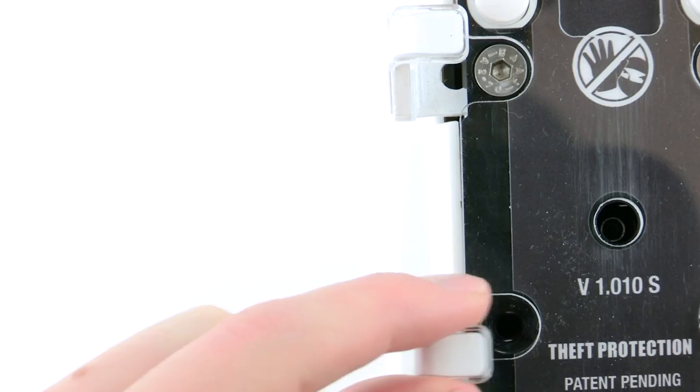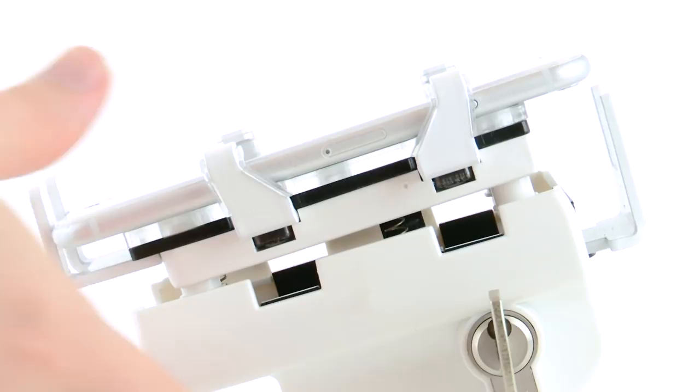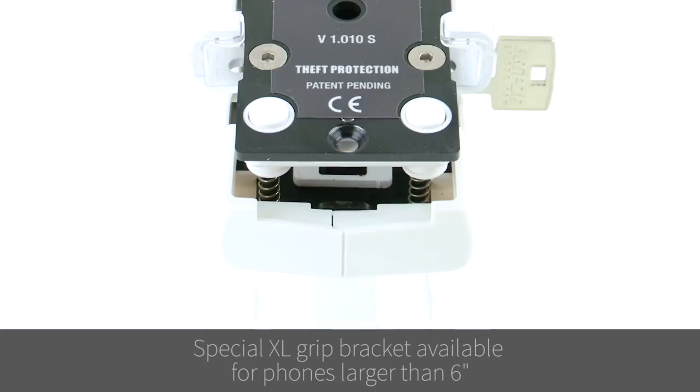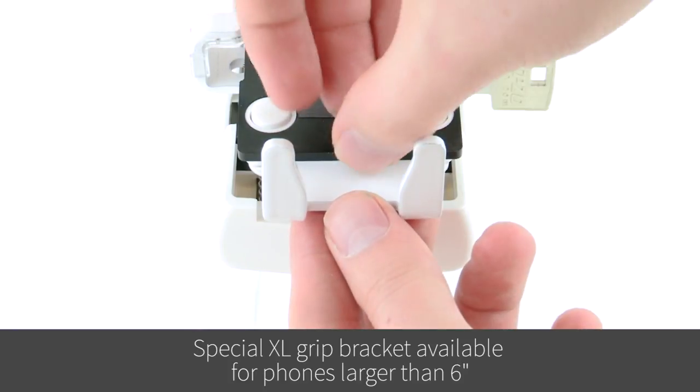Adjustable grips on the security brackets ensure that any device will fit, including any model and size of iPhone. Extra large grip brackets are available, along with an exchangeable bottom grip for phones larger than 6 inches.